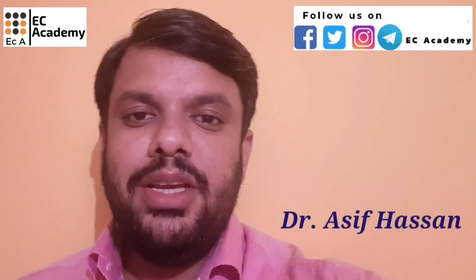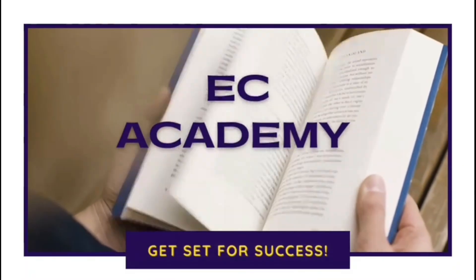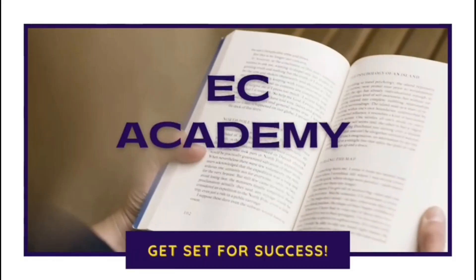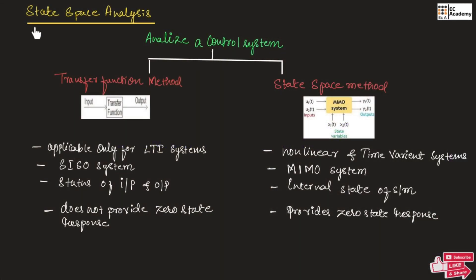Hello friends, welcome to ESA Academy. In this lecture, let us understand state space analysis. To analyze a control system, there are two methods. First one is the transfer function method and second one is the state space method.